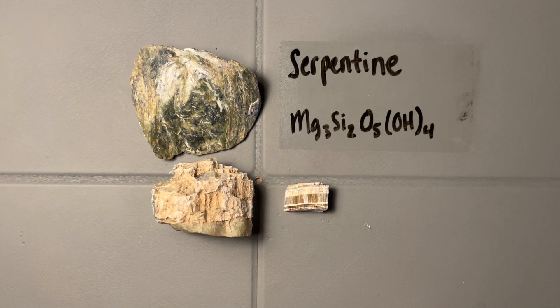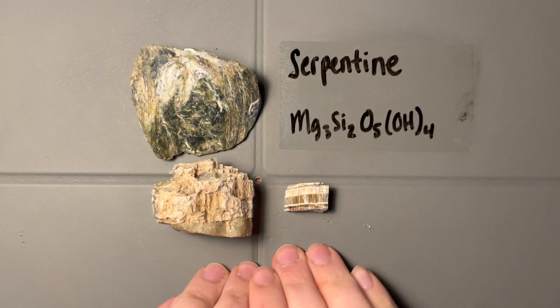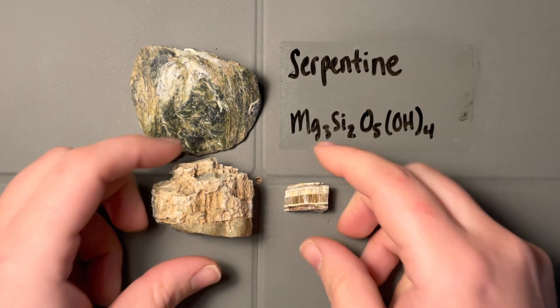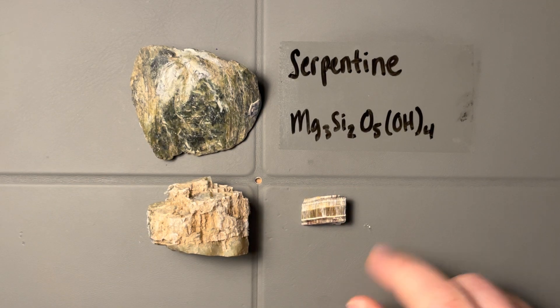Think back to asbestos removal, mesothelioma—all of that can be a problem because of serpentine. We're not going to be talking about medical geology today, but this is why it's the most dangerous mineral on our list.